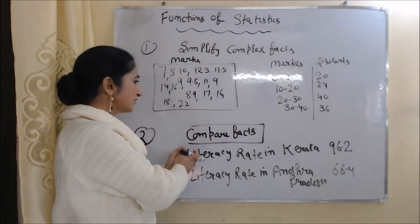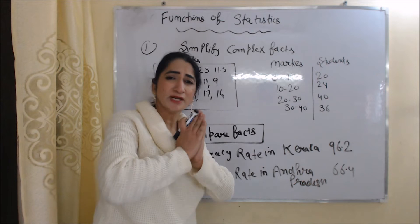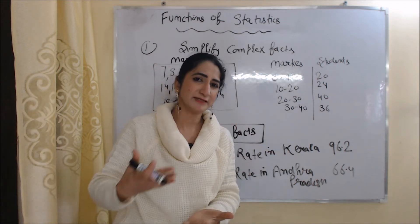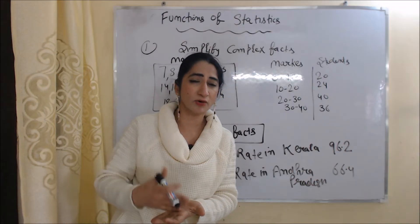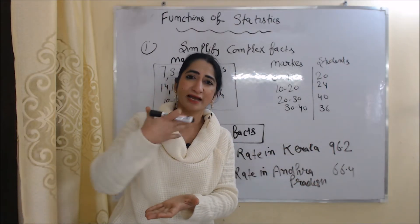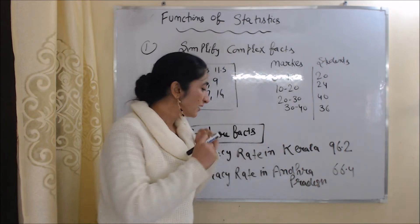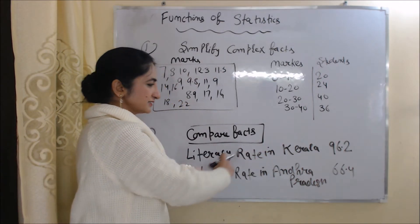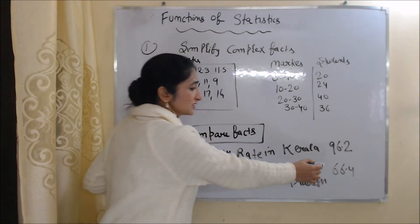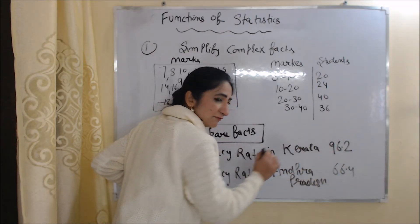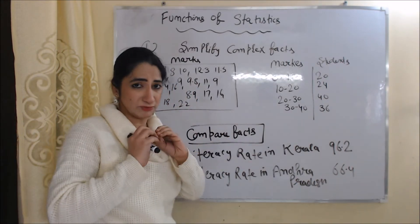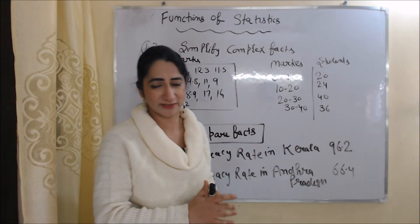The second function is to compare facts. With statistics, we can easily compare one piece of information with another. For example, saying literacy rate is high in Kerala and low in Andhra Pradesh doesn't allow comparison, but if we say literacy rate in Kerala is 96.2% and in Andhra Pradesh is 66.4%, then we can easily compare how much higher the literacy rate is in Kerala.